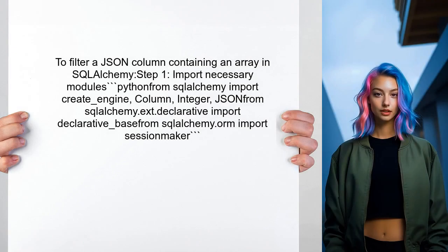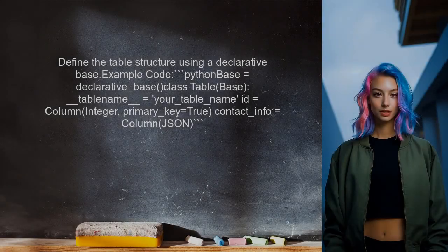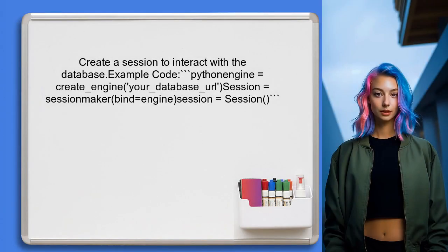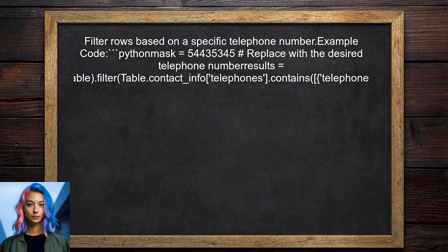To filter a JSON column containing an array in SQLAlchemy, the user should utilize the JSON functions provided by the library. First, they need to import the necessary modules from SQLAlchemy. Next, the user should define their table structure using a declarative base — this includes creating a class that represents the table with the JSON column. The user can then create a session to interact with the database by creating an engine and a session maker. To filter rows based on a specific telephone number, the user can use the JSON functions to access the array elements and use the contains method to check if the telephone exists in the array.